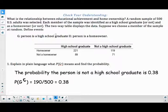Suppose we choose a member of the sample at random. Let's define the events G to be a person being a high school graduate, and H, person as a homeowner.